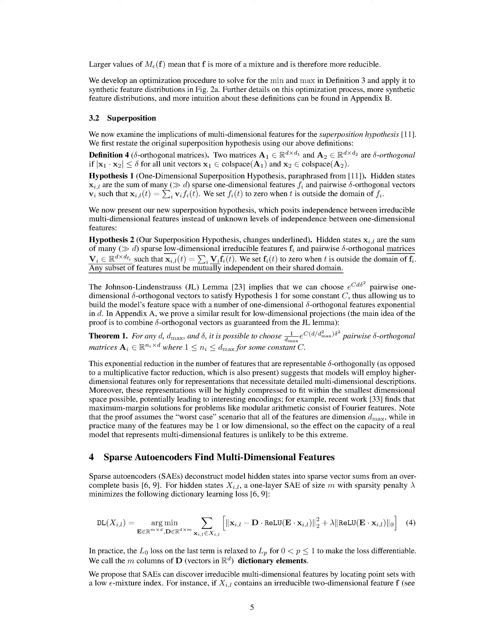We focus on defining L-layer transformer models M that process token inputs and produce hidden states X_{1,L}, ..., X_{N,L} for layers L, along with logit vectors Y_1, ..., Y_N. We explore decomposing these hidden states into functions of the input features, emphasizing the importance of meaningful and irreducible features for interpretability. By introducing the concepts of separability and mixtures, we aim to quantify the reducibility of features through the separability index S(F) and the epsilon mixture index M_epsilon(F), providing insights into the interpretability of multidimensional features in transformer models.